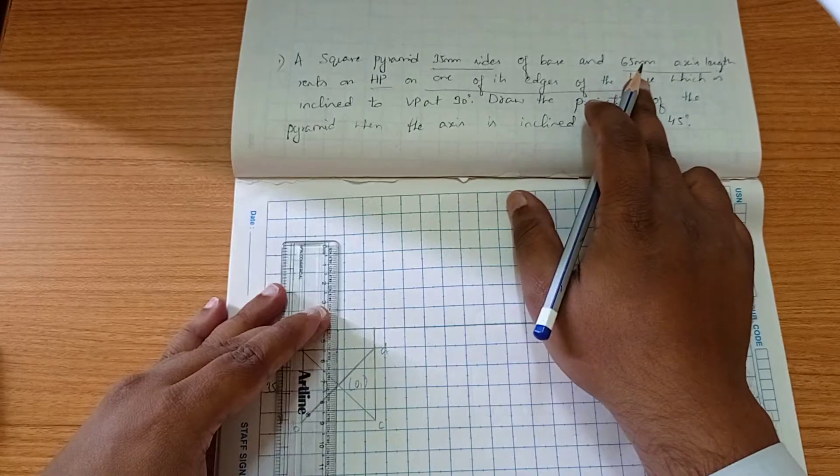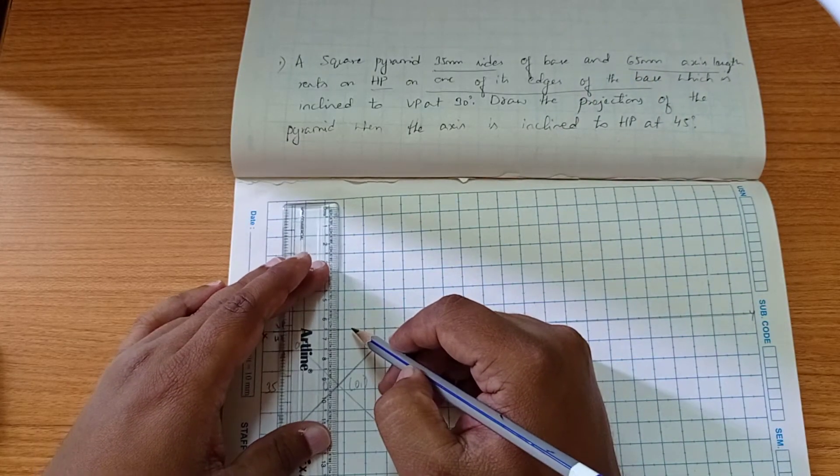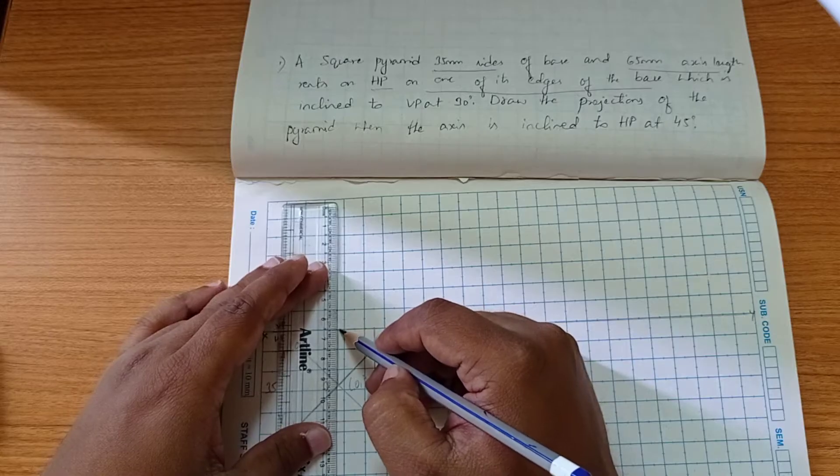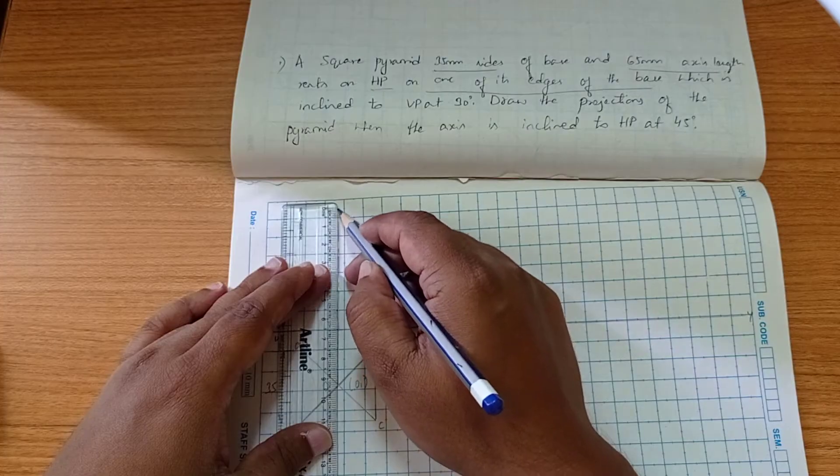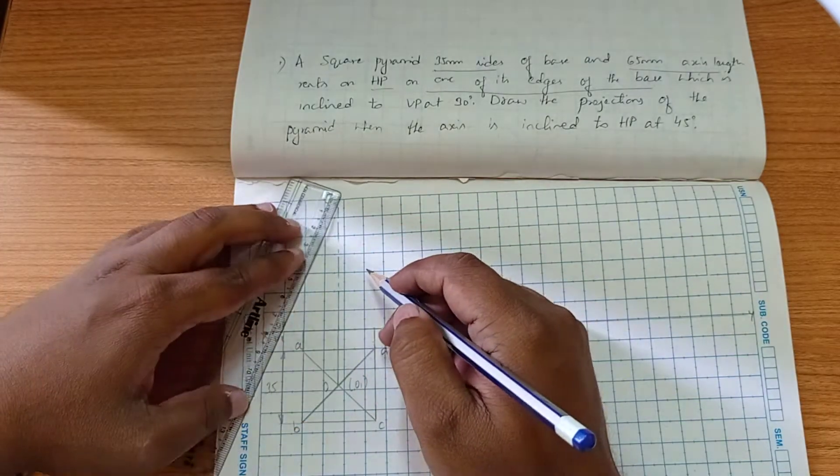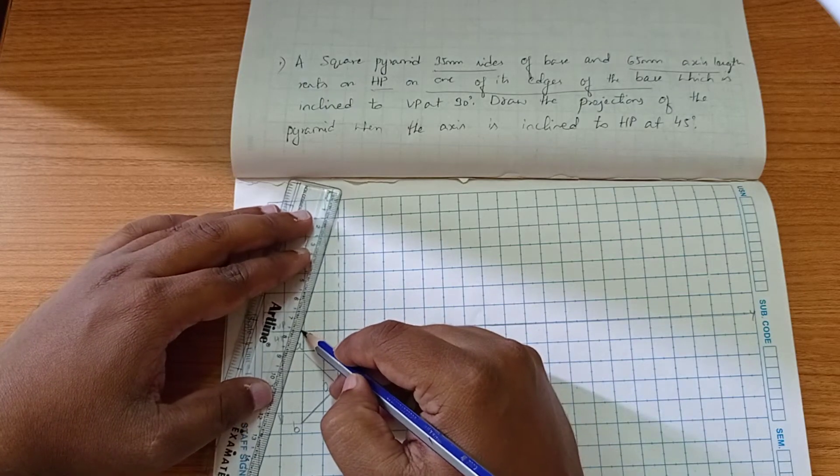Now projecting the axis length which is 65mm using the scale here. The front view of a pyramid is in triangle, you know it.